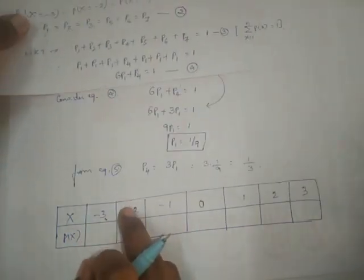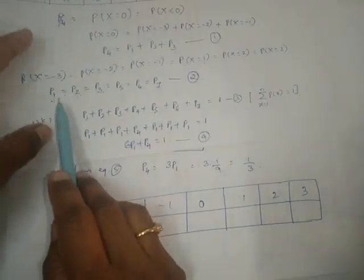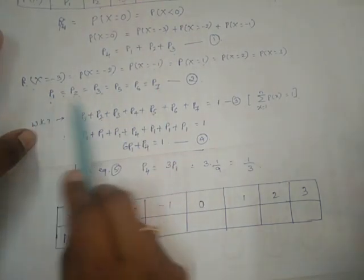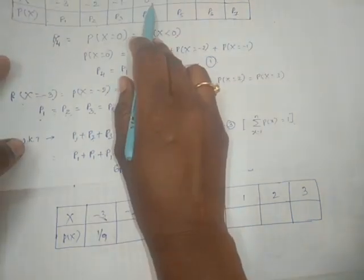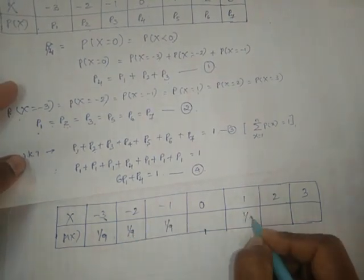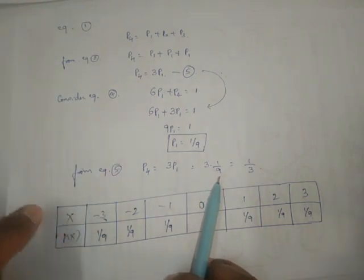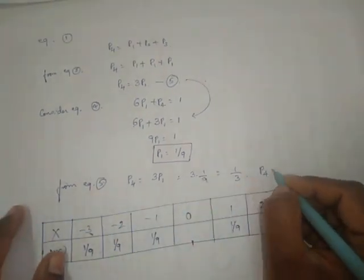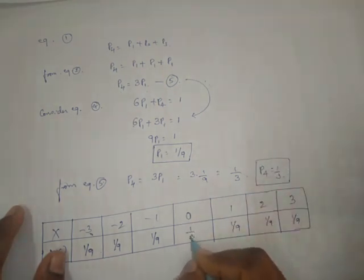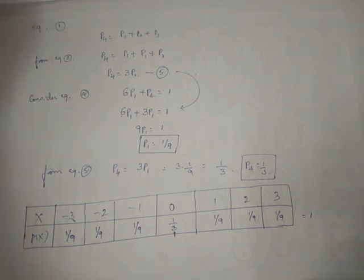Now we can fill in the table. The value p1 is 1/9. For all values of X except X=0, enter 1/9. For X=0, the value p4 is 1/3. If you add all these values in the table you will get 1, confirming the answer is correct.